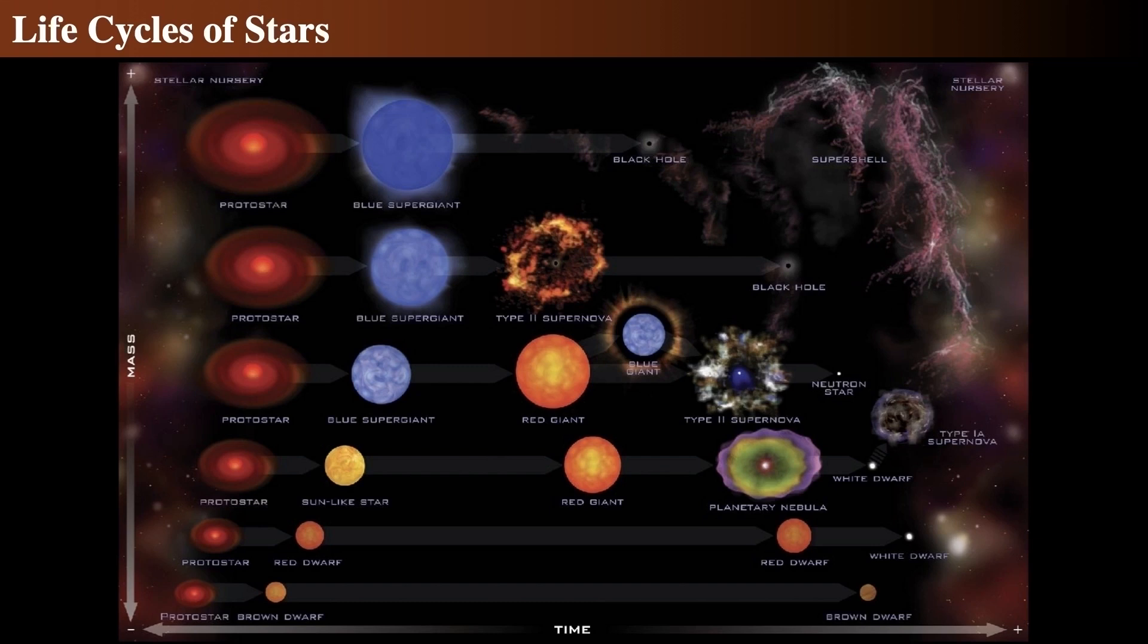At the bottom are the brown dwarfs which don't really seem to do much during their lives. That's not entirely true. So what happens to brown dwarfs? If the protostar is less than 8% of the mass of the sun, or 0.08 solar masses, this brown dwarf will never initiate fusion in its core.